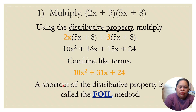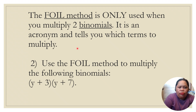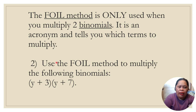A shortcut of the distributive property is what we call the FOIL method. The FOIL method is only used when you multiply two binomials. It is an acronym that tells you which terms to multiply. Let's use the FOIL method to multiply (y + 3) times (y + 7).